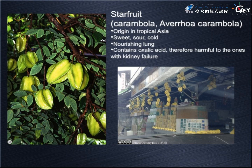Next is star fruit juice. Star fruit is originally from tropical Asia and has a sweet, sour, and cold property. It is said to be very good for your lungs and throat, and it's a popular drink to reduce the heat of the body and soothe a sore throat. You should be aware, however, that because it contains oxalic acid, someone with kidney failure cannot eat star fruit as it may damage the kidneys.